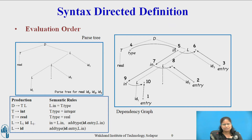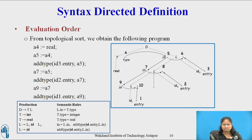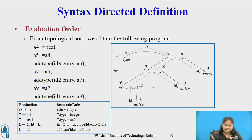Example: each of the edges in the dependency graph in the figure goes from the lower-numbered node to the higher-numbered node. A topological sort of the dependency graph is obtained by writing down the nodes in the order of their numbers. From the topological sort we obtain the following program: a4 = real, a5 = a4, add_type(id3.entry, a5), a7 = a5, add_type(id2.entry, a7), a9 = a7, add_type(id1.entry, a9).